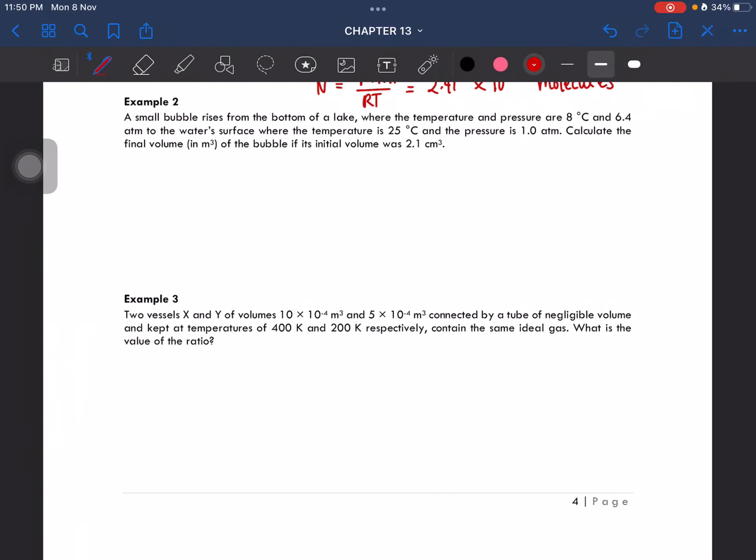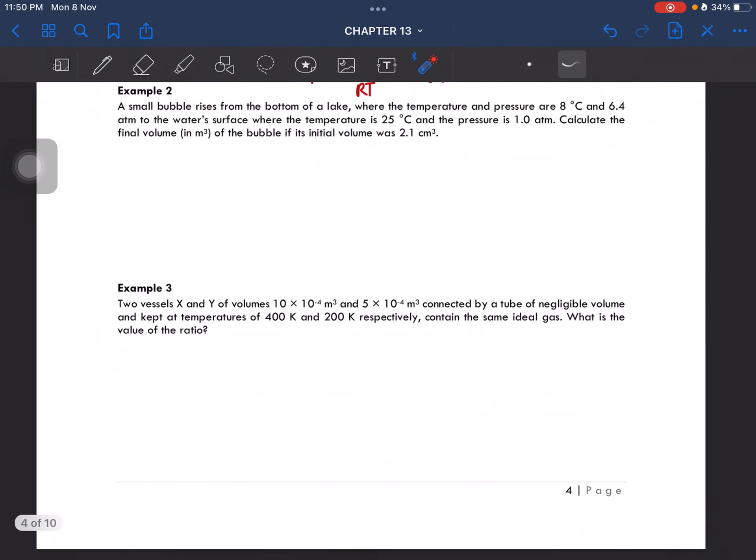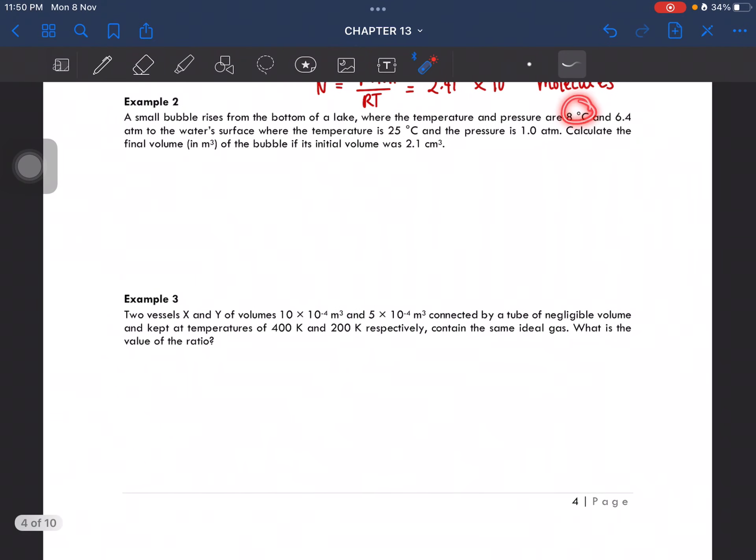Okay, Example 2. A small bubble rises from the bottom of a lake where the temperature and pressure are 8 degrees Celsius and 6.4 atmospheres to the water surface where the temperature is 25 degrees Celsius and 1 atmosphere. Calculate the final volume if its initial volume was 2.1 cubic centimeters. So we're going to separate the information between initial and final.